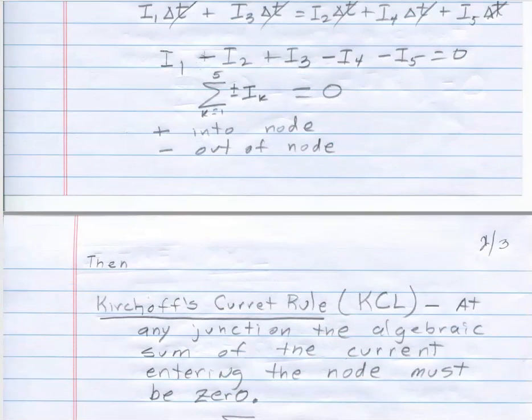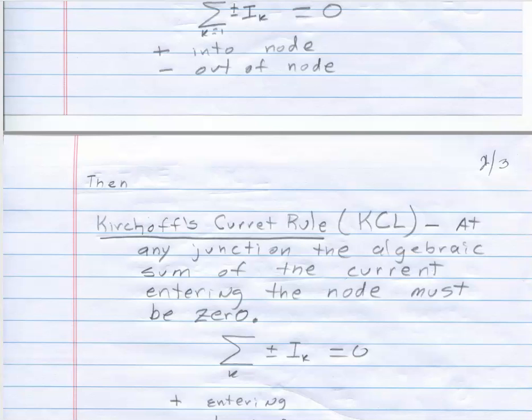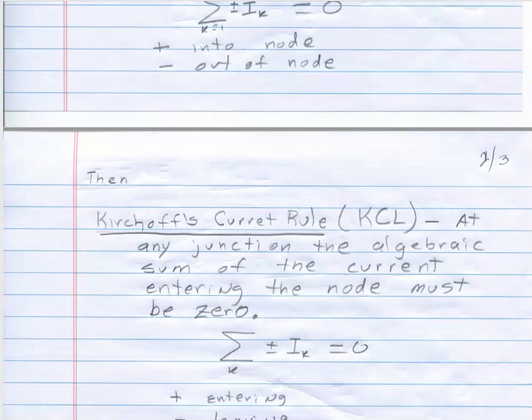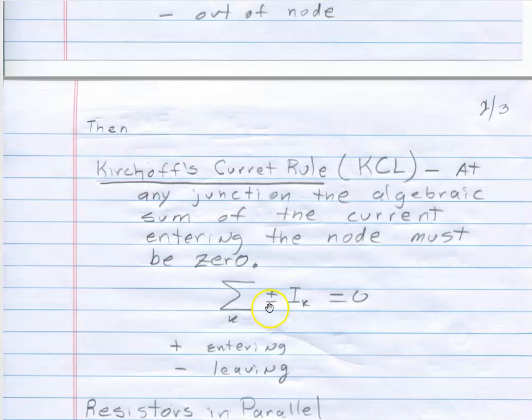Well, that leads us to Kirchhoff's current rule. At any junction, the algebraic sum of the current entering the node must be zero. And again, I simply write it in this form. And the plus or minus I assign by looking at it. You'll see plus if it's entering and minus if it's leaving.